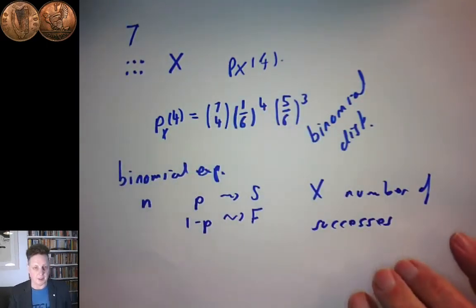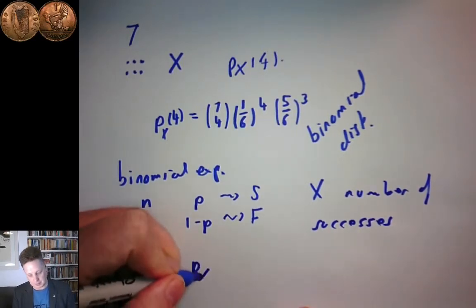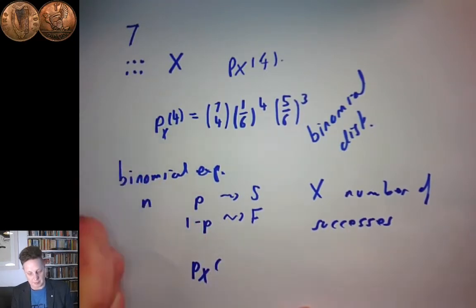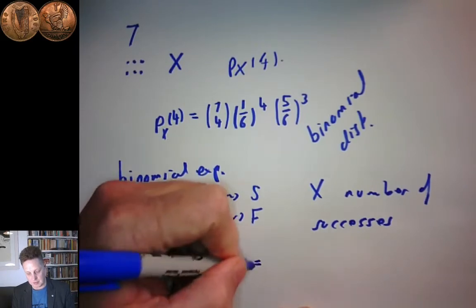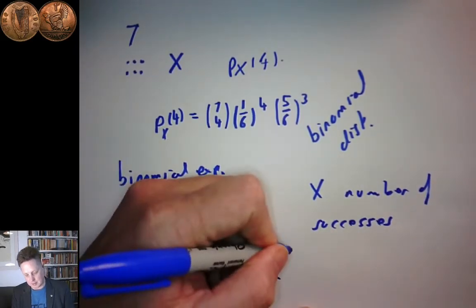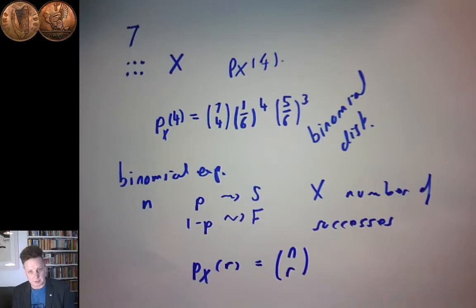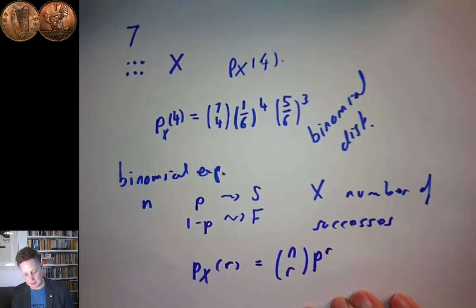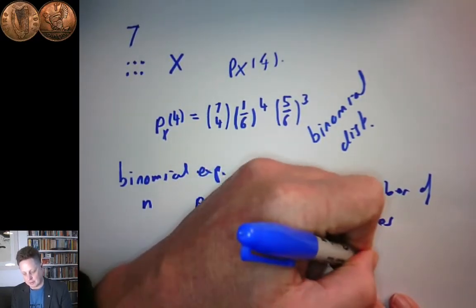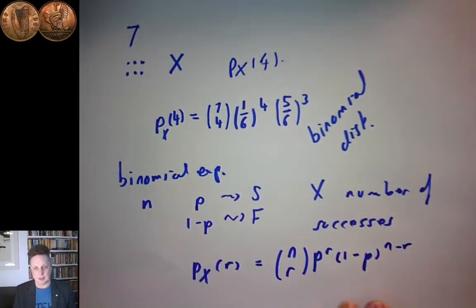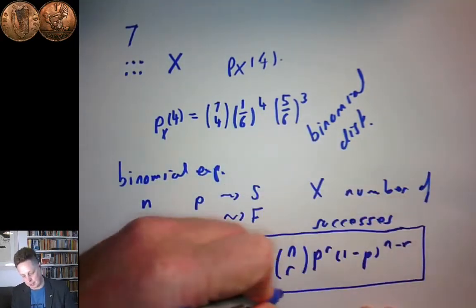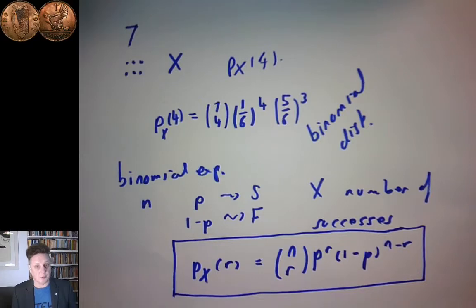The random variable we're looking at is the number of successes. This is a binomial experiment. The thing we're interested in is the probability that x equals some value r. So P_x(r) equals n choose r — the number of different slots that we arrange the r successes into — times the probability of r successes, which is p to the r, times the probability of n minus r failures, which is (1 minus p) to the n minus r. That's the probability distribution for the binomial experiment, and it's one of the standard discrete probability distributions.